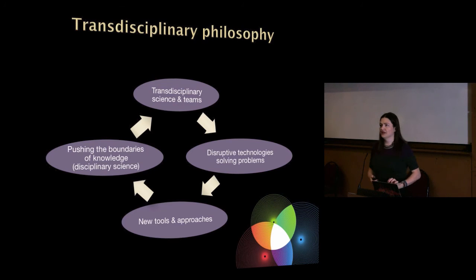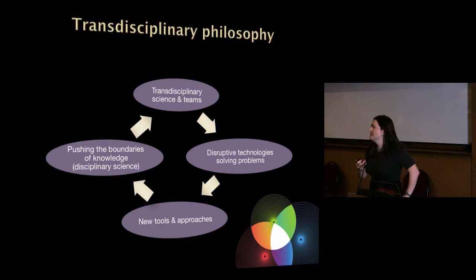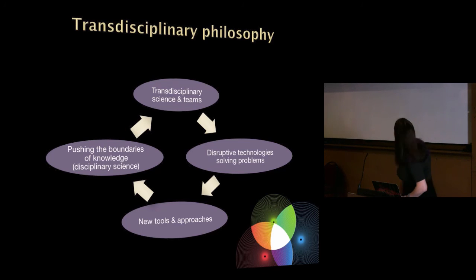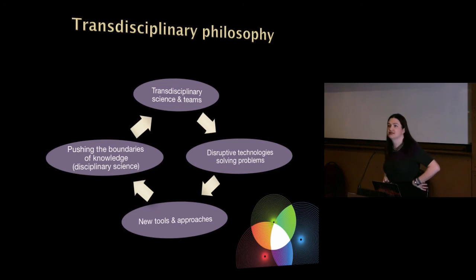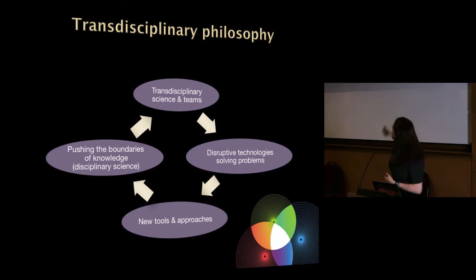Before I get into more detail, I want to share a little philosophy about the concept of transdisciplinary science. Typically there's a looseness to which people use that terminology. Essentially, if you have scientists with very different backgrounds and skill sets and you form teams, it allows you to develop disruptive technologies. A disruptive technology is not an improvement over the way we currently solve a problem — it is a totally new, game-changing way of solving a problem. That then creates new approaches and tools that people can use to do different science.